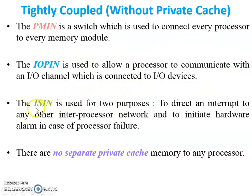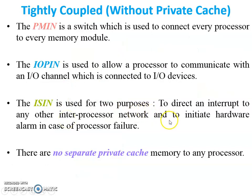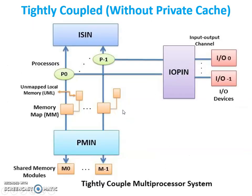The ISIN is used for two purposes: first, to direct an interrupt to any other inter-processor network — if any interrupt is generated and it needs to be sent to PMIN or IOPIN, it can directly send that interrupt. Second, if any processor fails, it generates a hardware alarm to the system. Since there are no separate private caches available, this is the without-private-cache tightly coupled system.